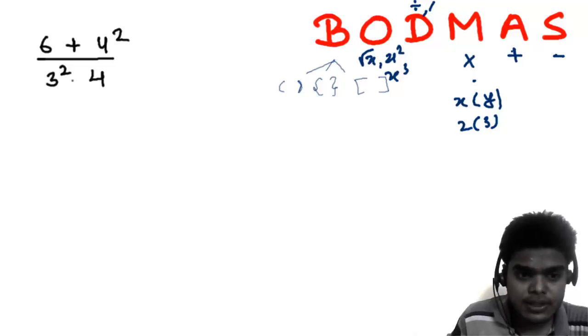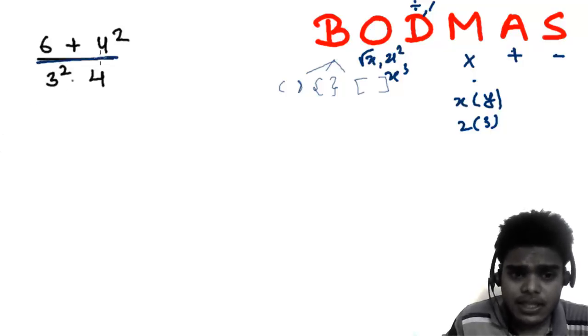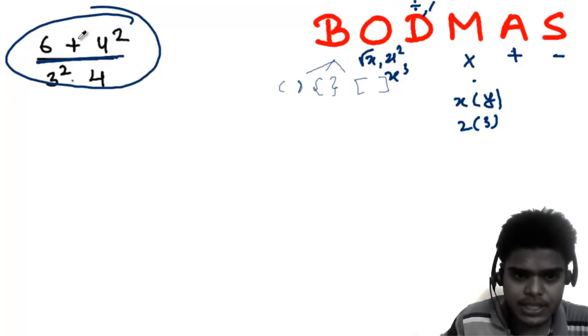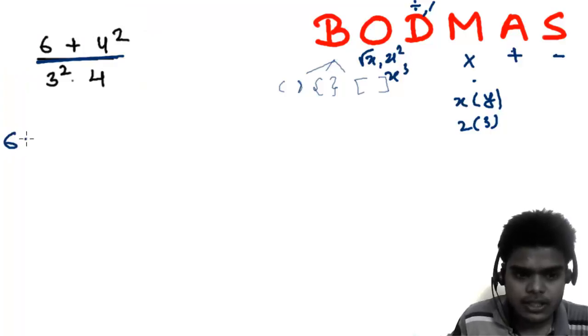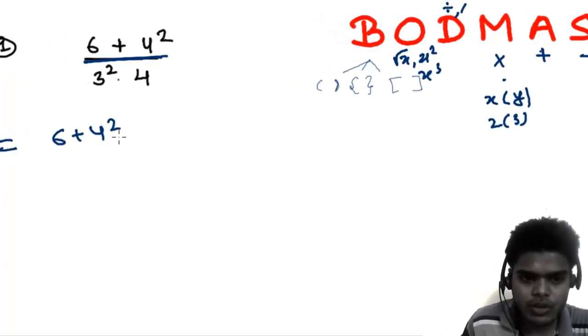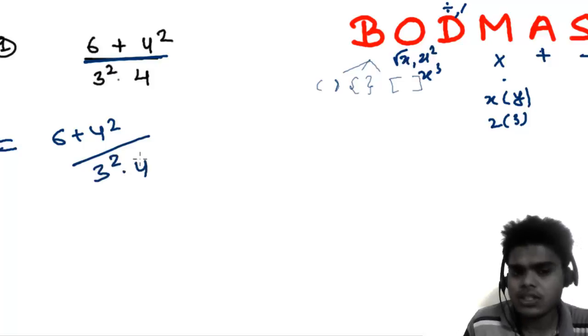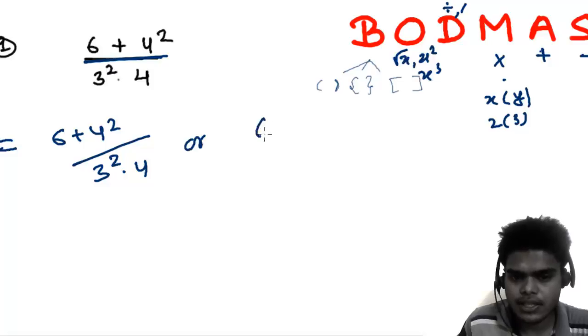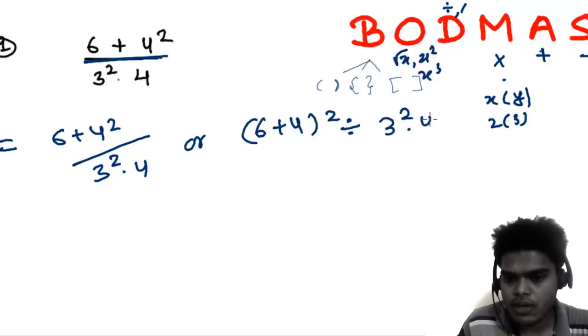Let me tell you, this is the symbol of division. And you can write the same thing in different ways. 6 plus 4 squared divided by 3 squared times 4. Some people write like this, some people can also write like this with brackets so they can write in a line. All three are the same thing.